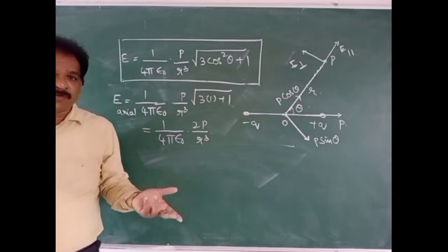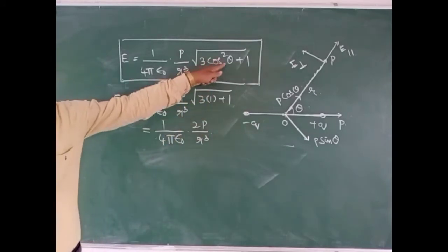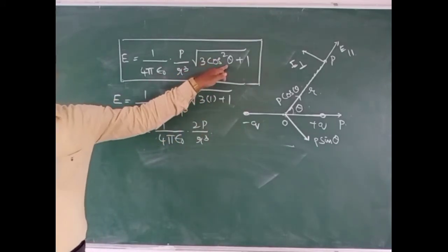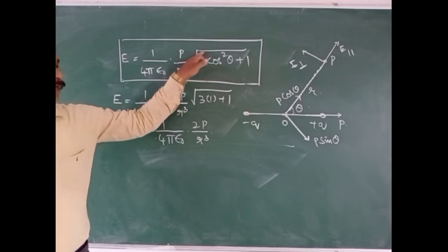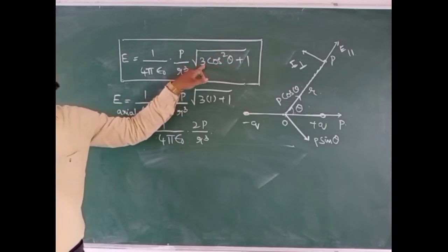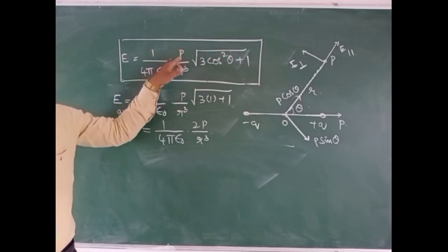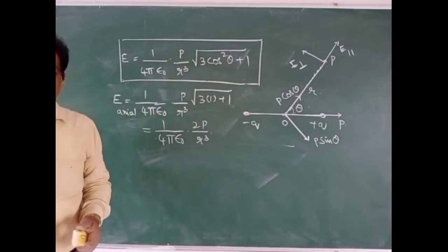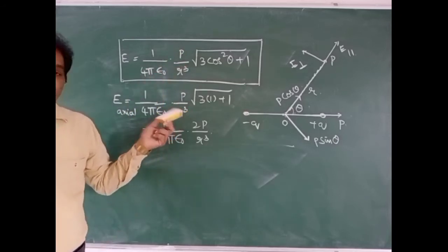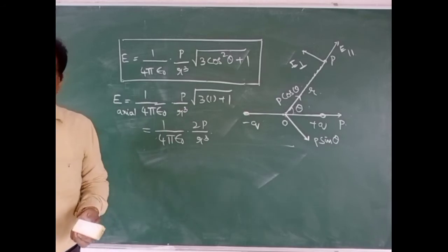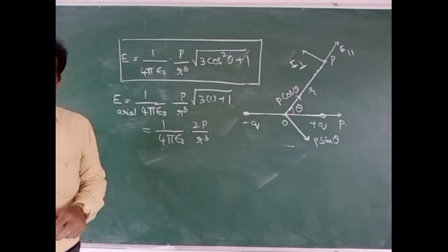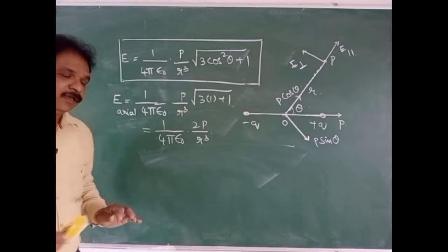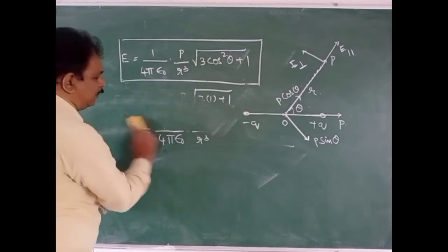On the equatorial line, theta = 90 degrees. Cos 90 is 0, so 3cos²θ becomes 0, and we get E = 1/(4πε₀) × p/r³. So from this general formula, we can derive the electric field intensities on both the axial line and on the equatorial line.